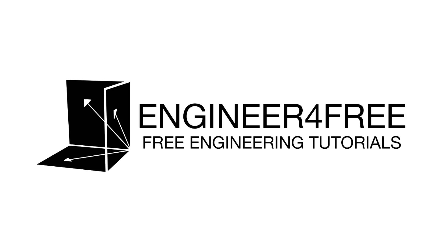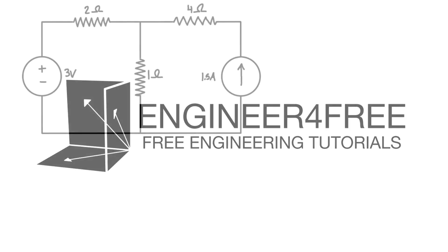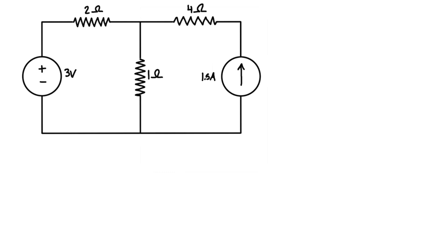In this video I'm going to introduce mesh analysis, talk about how we can use it to solve for unknowns in circuit problems, and then solve the example on the screen to figure out what the currents are going through each of the resistors using mesh analysis. In the next couple of videos we'll do some more complicated examples so you can get different ideas of how to apply this.